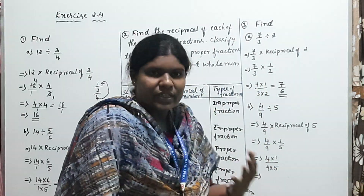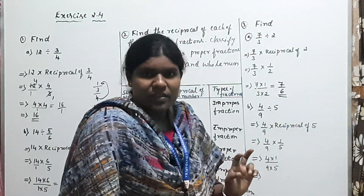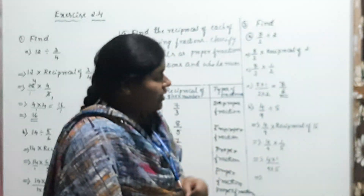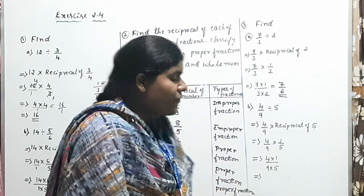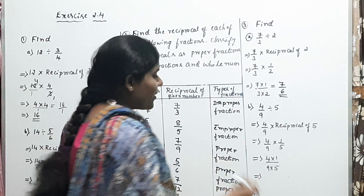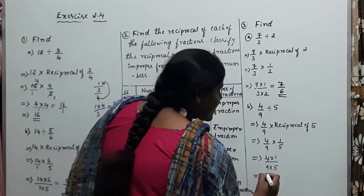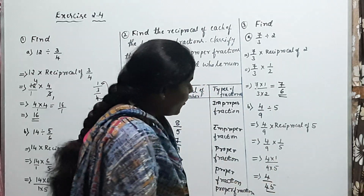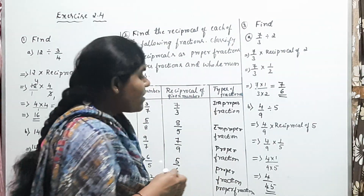One more example using the same method: 4/9 divided by 5. This is also division of a fraction by a whole number. Keep 4/9 as it is and take the reciprocal of 5, which is 1/5. So 4/9 multiplied by 1/5 equals 4 times 1 divided by 9 times 5 — that is 4 divided by 45. The final answer is 4/45.